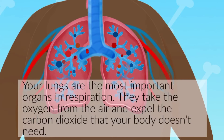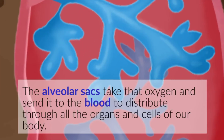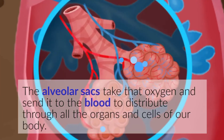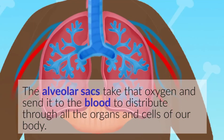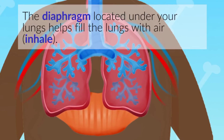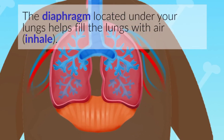Your lungs are the most important organs in respiration. They take the oxygen from the air and expel the carbon dioxide that your body doesn't need. The alveoli sacs take that oxygen and send it to the blood to distribute through all the organs and cells of our body.